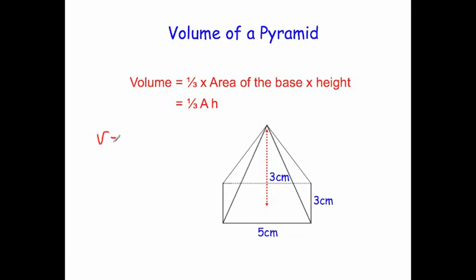The volume is equal to one-third times the area of the base, where the base is going to be 3 times 5, which is 15, times the height, which is 3. Let's work that out: one-third of 15 is 5, times 3 is 15. So the volume is 15cm³.